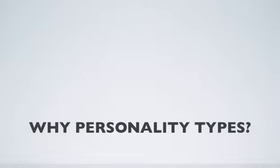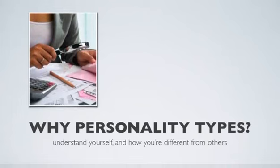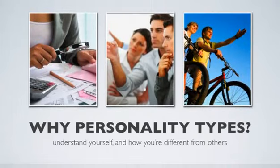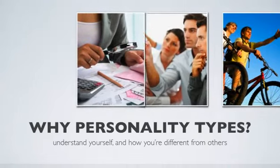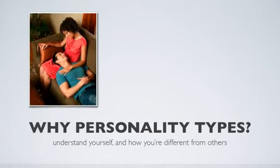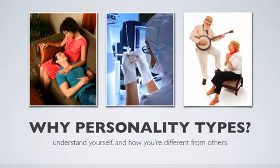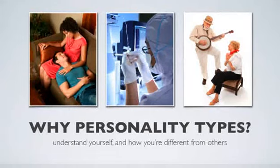The Myers-Briggs theory of personality is a way to describe differences in the way people think, make decisions, and approach the world around us. It can help you to understand why you communicate better with some people than with others, why some jobs seem more appealing to you, and why you approach relationships the way you do. Understanding your unique type opens up a wealth of knowledge about who you are and why you do the things you do.